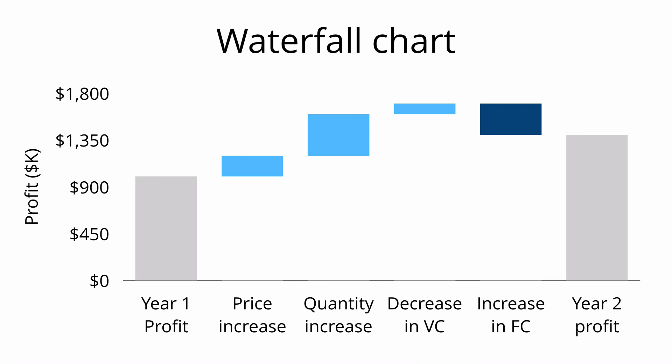The next chart is the waterfall chart. The waterfall chart shows, or reconciles, how we get from one number to another. This chart shows how we get from year 1 profit — the gray bar on the far left — to year 2 profit, the gray bar on the far right. Profit has increased from year 1 to year 2. The bars in light blue show drivers that increased profits: a price increase, a quantity increase, and a decrease in variable costs. The bar in dark blue shows what decreased profits — an increase in fixed costs. We can conclude that the largest driver of the increase in profit is from a quantity increase, since that is the largest light blue bar.